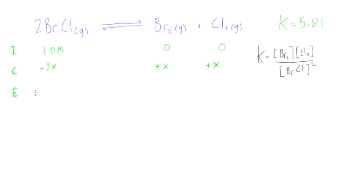Now the equilibrium is just the initial plus the change. So we have basically 1.0 minus 2X, this is all in molar. And here we have 0 plus X, so we'll just have X molar and X molar. Now what we can do is we have all of our equilibrium concentrations even though they're still unknown, but we can plug them into this expression here.